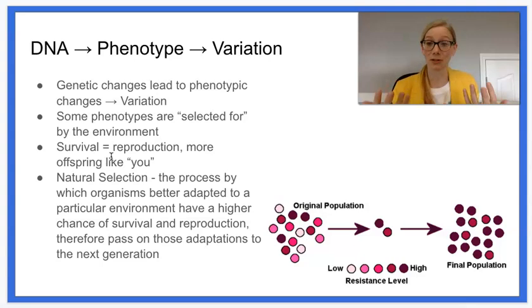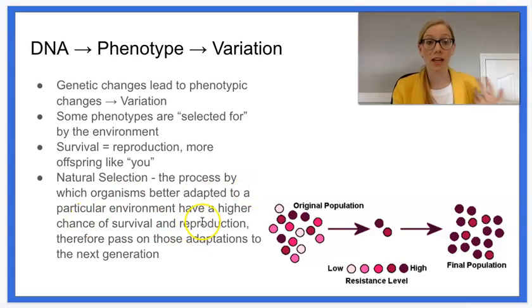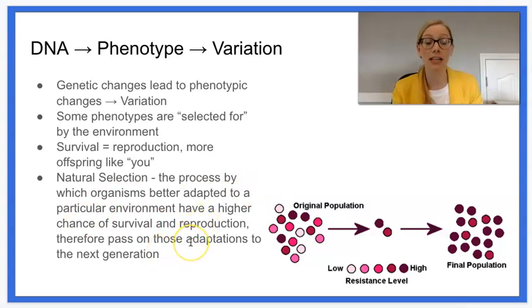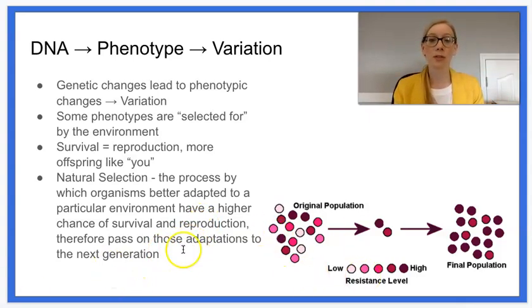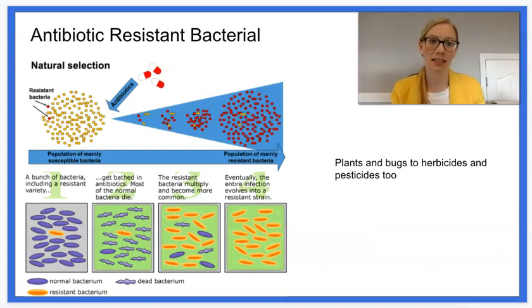We sometimes call this natural selection, because natural selection is just the process by which organisms better adapted to a particular environment have a higher chance of survival and reproduction. Therefore, they pass on their adaptations onto the next generation. We can see this in a picture here, and one of the easiest to understand examples is bacteria and antibiotic resistance.